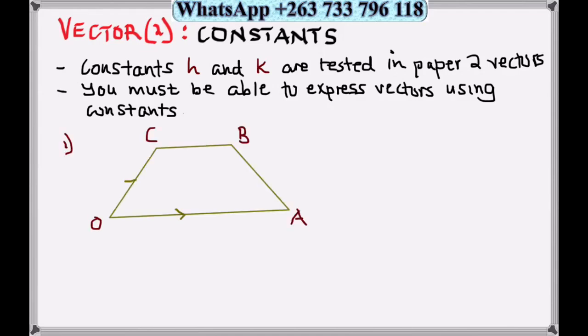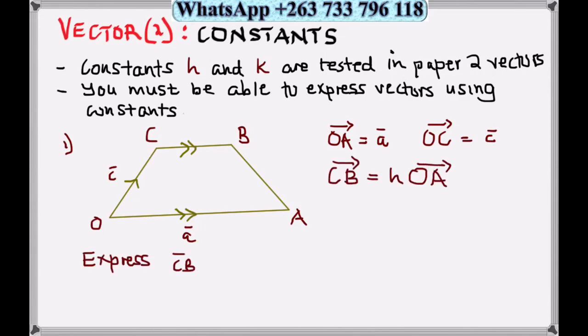For example, this is my example here. We can see vector C and vector A. Vector OA is represented by vector A, and vector OC is represented by vector C. Vector CB is equal to h times vector OA, which means this constant will multiply the quantity for vector OA, which is A. Therefore, to solve this, we multiply the constant by the quantity. So vector CB equals h times vector A, which is h vector A. The constant acts as a coefficient.